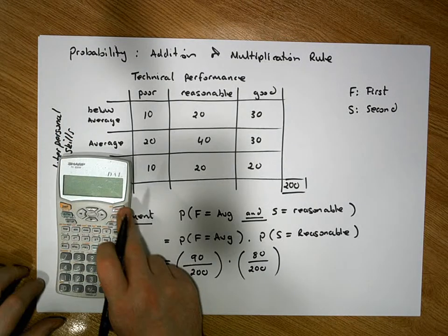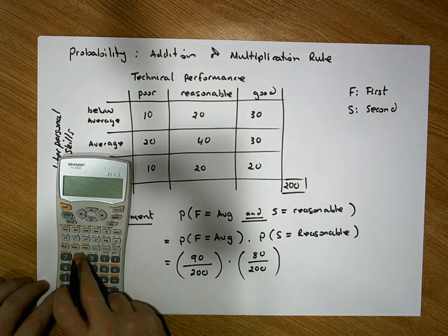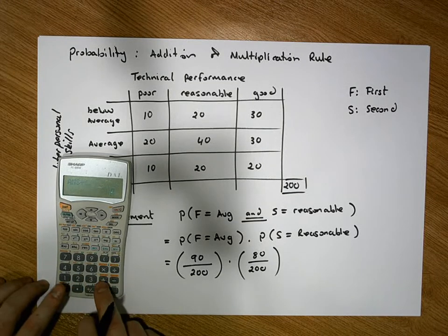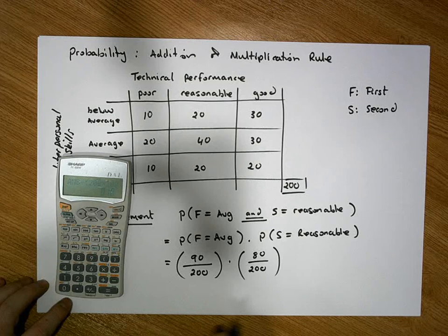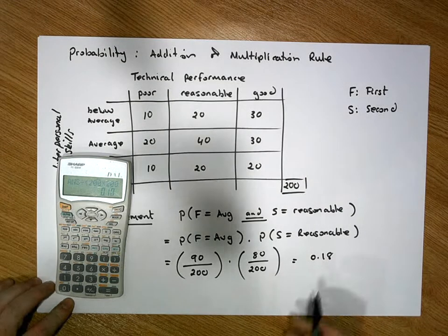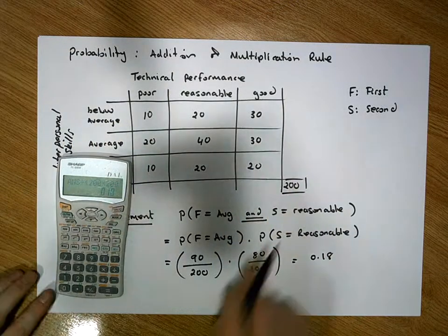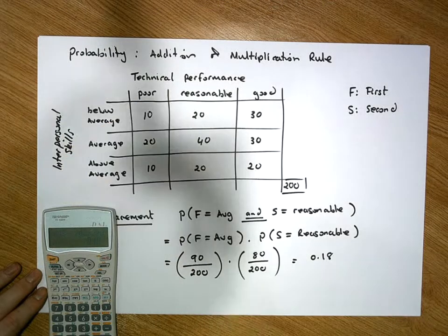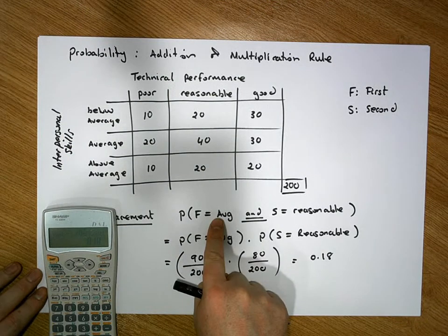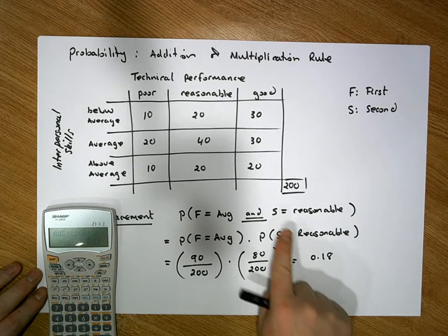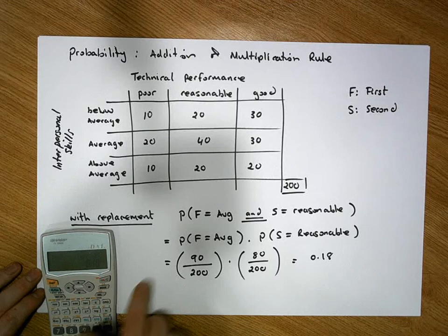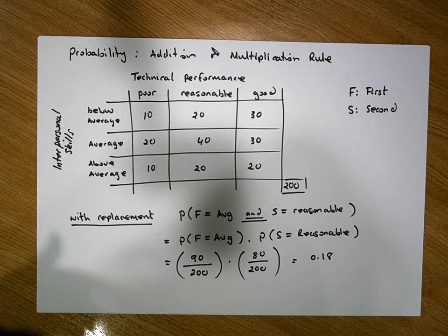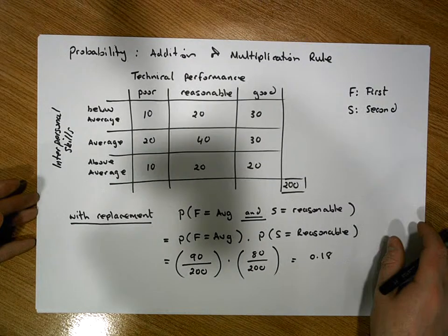Multiplying fractions top by top and bottom by bottom: 90 times 80 gives 7200, divided by 200 times 200 which gives 40000, and that gives us a value of 0.18. So there's an 18% likelihood that the first person has average interpersonal skills and the second person has reasonable technical performance when sampling with replacement.